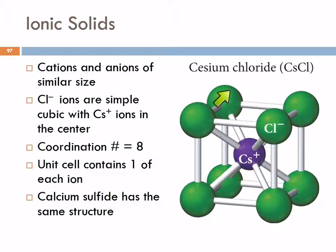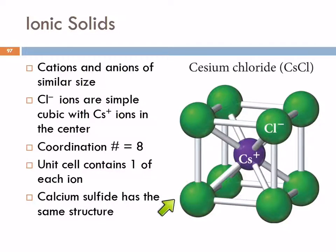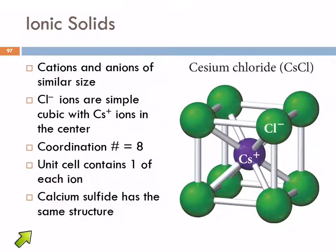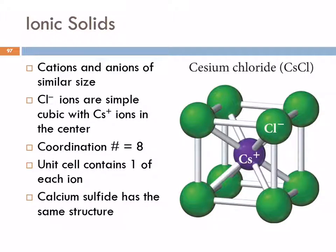In this example of cesium chloride, the chloride and cesium ions are similar in size. And so this can pack in a simple cubic structure with a coordination number of eight. Calcium sulfide has the same structure. This can happen only when you have similarly sized ions and you also need a charge balance.